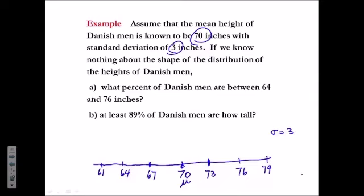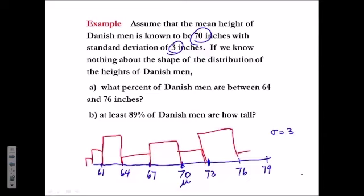Now, regardless of the shape of the distribution — I don't know anything about the shape of the distribution; maybe the shape is like this — it doesn't matter what the shape is. Regardless of the shape of this distribution, Chebyshev's theorem is going to hold.